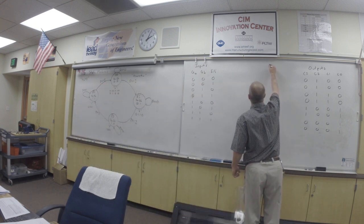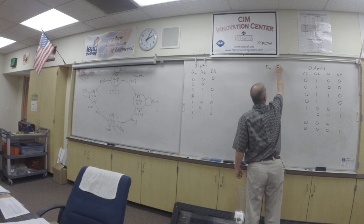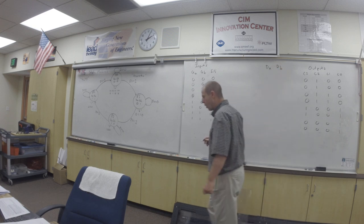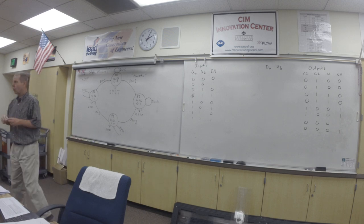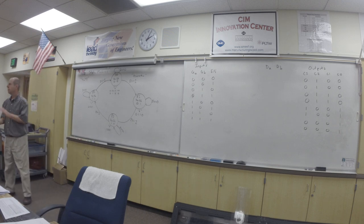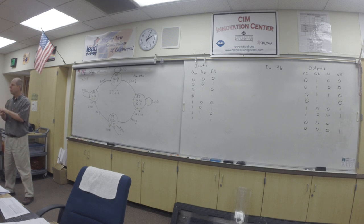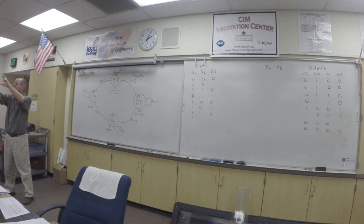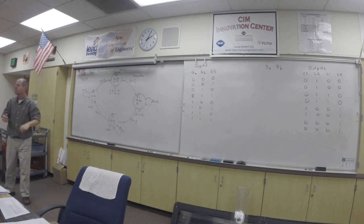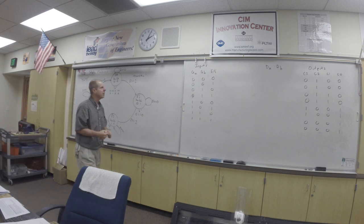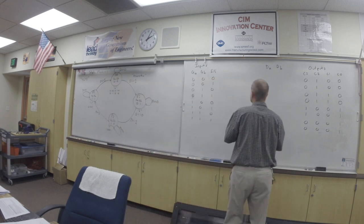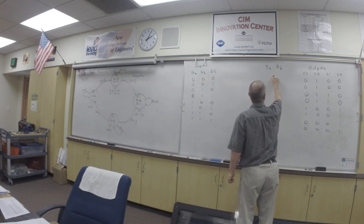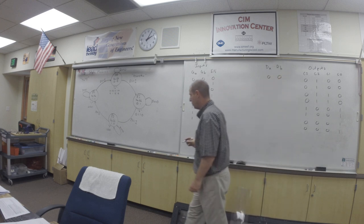We're going to make another column here called DA, and another called DB. What do I mean by DA and DB? Those are the D inputs for the two flip-flops. We've got a first D flip-flop whose input we'll call DA, and a second flip-flop whose D input is called DB. So at zero-zero-zero — the initial position — DA and DB are going to be zero-zero.